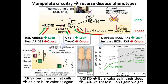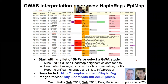And if we down-regulate IRX3, one of the two genes that is up-regulated, what we find is that mice lose a lot of their body weight, their fat stores are completely depleted, and when you put them on a high-fat diet, they're unable to gain weight, indicating that we have successfully understood the circuitry of this disease.